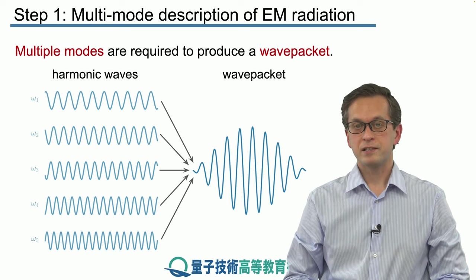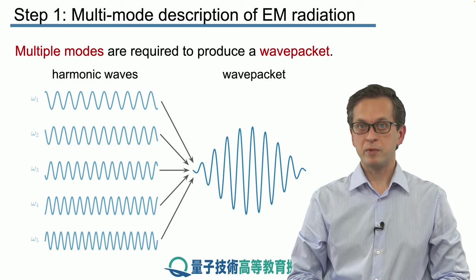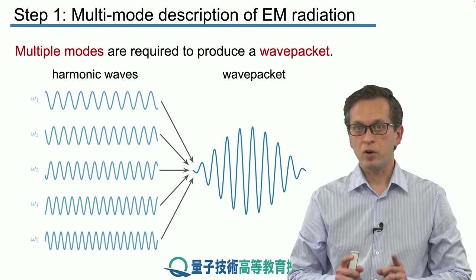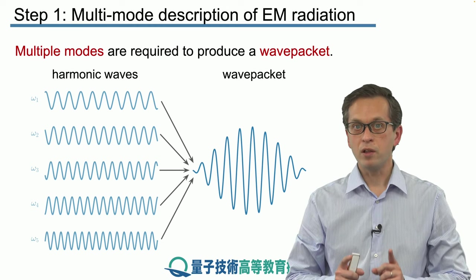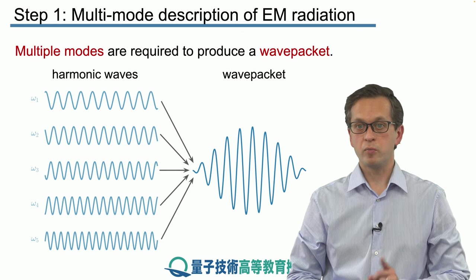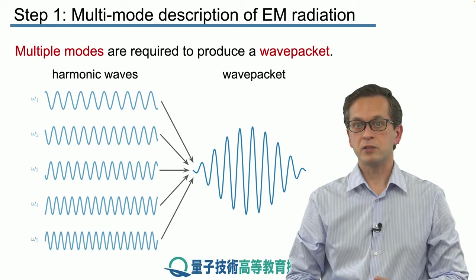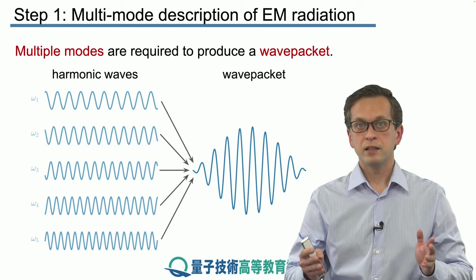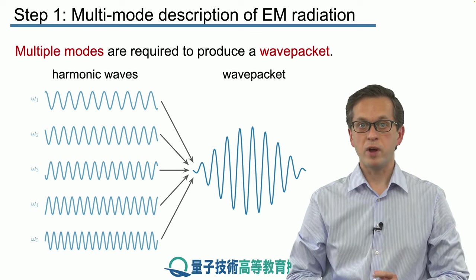We have said in the previous lessons that the model that we used to describe single photons was just a toy model and not very realistic. We modeled it as the number state ket one of a single mode. A single mode of radiation represents a plain harmonic wave and we know that such a wave cannot represent a wave packet.